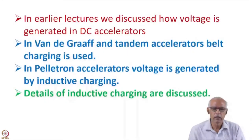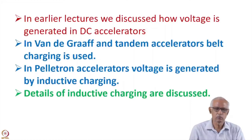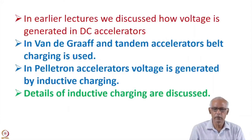In earlier lectures, we discussed how voltage is generated in DC accelerators. There are three types of DC accelerators: Cockcroft-Walton, Van de Graaff Accelerator, and Tandem and Pelotron Accelerators.